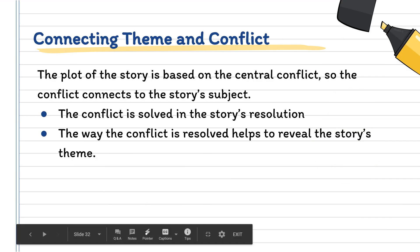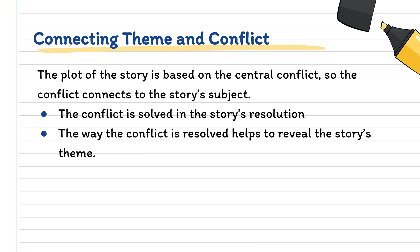Now, connecting theme and conflict: the plot of the story is based on the central conflict. The conflict is really going to connect to the story's subject — it's solved in the story's resolution and is what makes the story interesting. Without a conflict, the story is not interesting at all. The way the conflict is resolved helps to reveal the story's theme, because throughout the conflict being solved, your character is going to learn lessons. Those lessons tell you what the theme is — the lesson the author wanted you as the reader to learn as well.